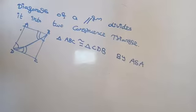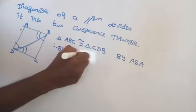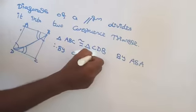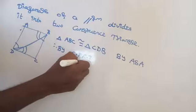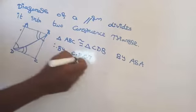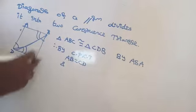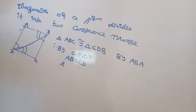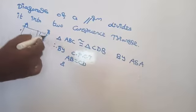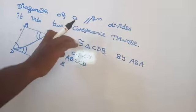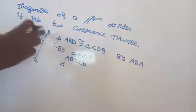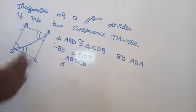By ASA congruence rule. Sorry — I think we made a mistake here. It should be triangle ABD and triangle CDB. So by CPCT, we can say AB equal to CD, and BD equal to DB — BD is common.